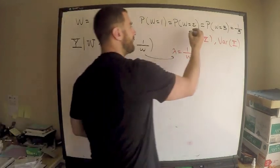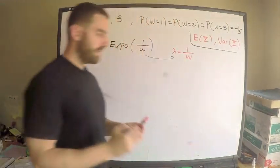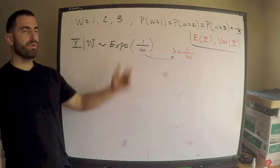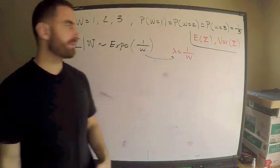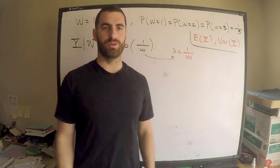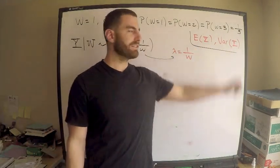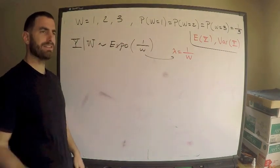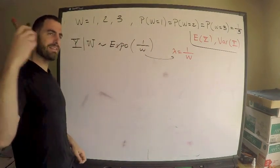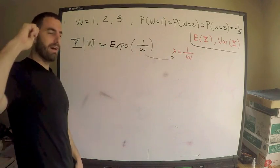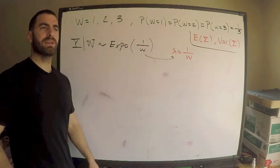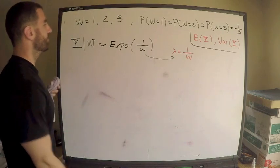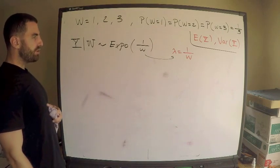We need that because they want to know the unconditional expectation of Y — meaning no condition — and the unconditional variance. This is actually a good example because it's going to test you on two things: double expectation and the law of total variance, which are important things to know for Exam P.